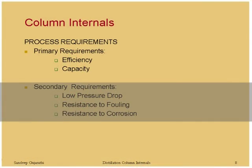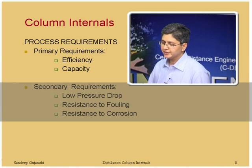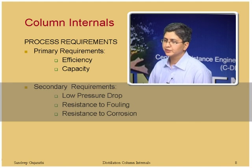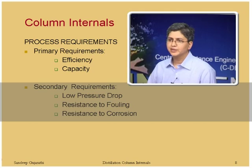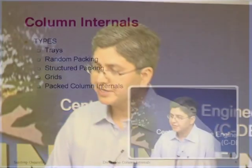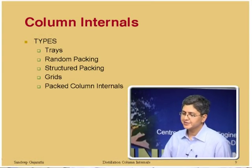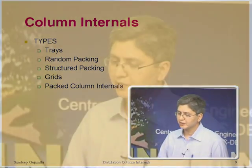The secondary requirements — which are equally important — are pressure drop considerations, resistance to fouling, and resistance to corrosion. Based on these primary and secondary requirements, the selection of column internals is determined. Various types of column internals include trays, random packing, structured packing, grids, and packed column internals.